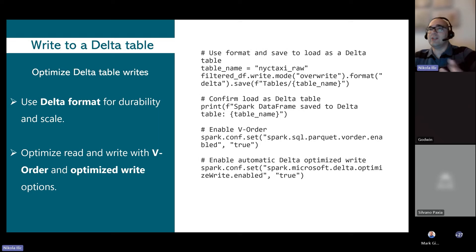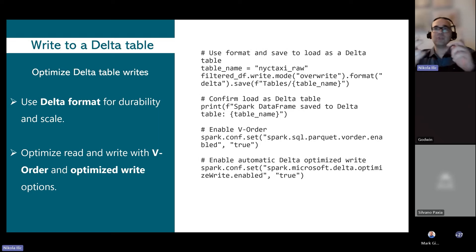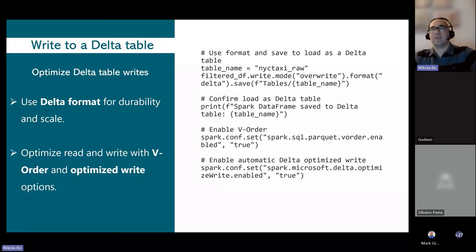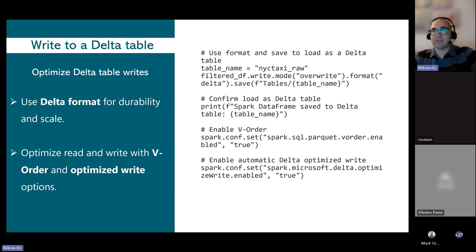All engines in Microsoft Fabric apply V-ordering by default when writing data — a special Microsoft algorithm that additionally optimizes data sorting. This makes subsequent read operations from Power BI, SQL, Lakehouse, or Warehouse significantly more performant.